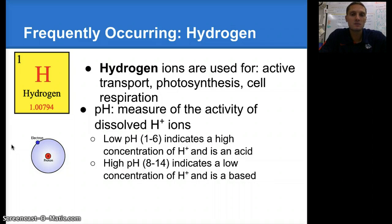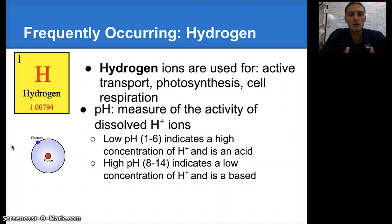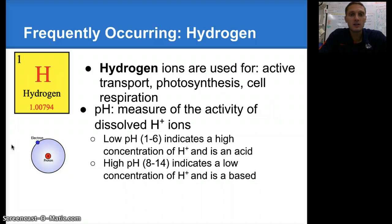Especially organisms living in an aqueous environment — a marine environment, for example — if the pH changes, either getting too high or too low, it can cause a major change in their environment and can interrupt their ability to maintain homeostasis, and can eventually cause them to die if the pH changes too much.